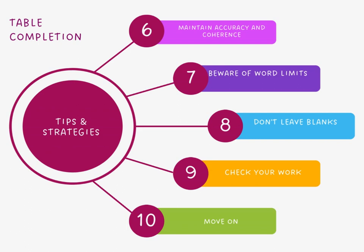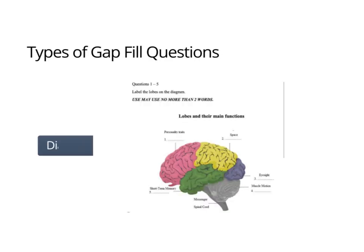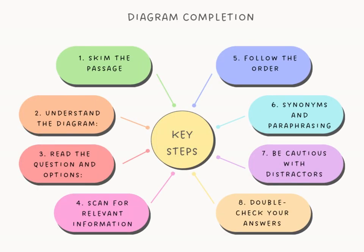Now let's look at the diagram completion question. A diagram is used when a text describes a concept which is difficult to visualize through words only — a visual representation such as a picture or drawing makes the process clearer and easier to understand. In IELTS reading, diagram completion questions require you to complete a diagram or flowchart using information from the passage. You fill in the missing areas in the diagram based solely on the information provided in the passage.